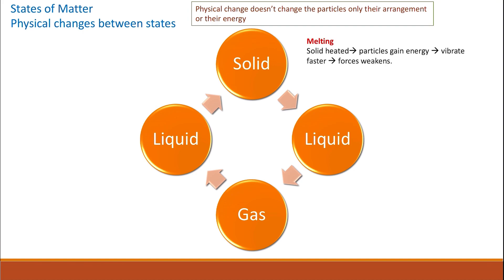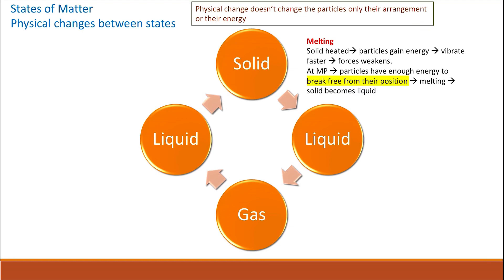When solids change into liquid, this is called melting. In melting, solids are heated and the particles gain energy. The particles start to vibrate faster and the forces of attraction between the particles weaken. Then at melting point, the particles have enough energy to break free from their position — they are no longer just vibrating, they start to move more freely, and the solid becomes liquid.